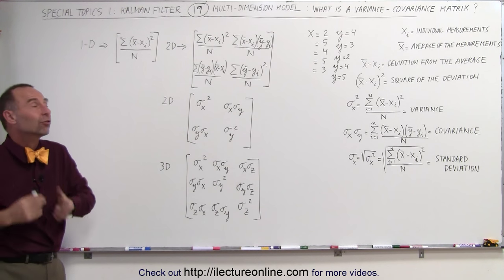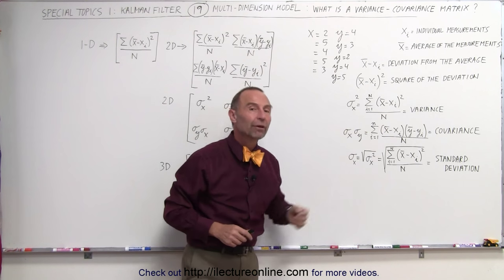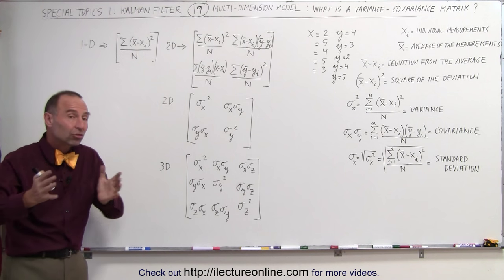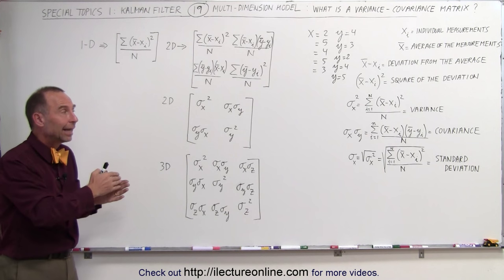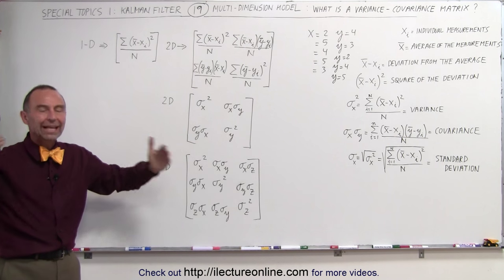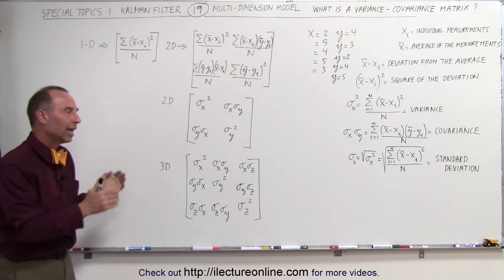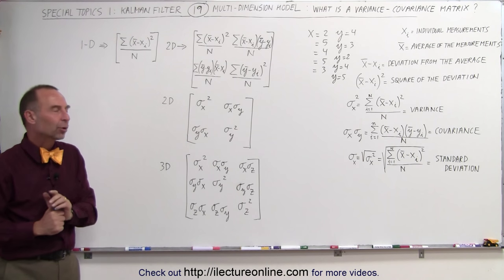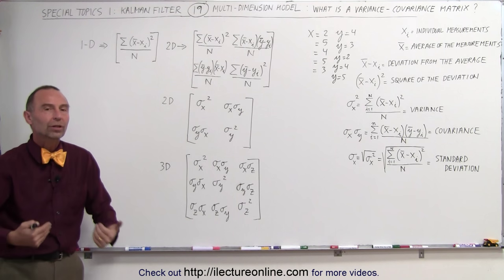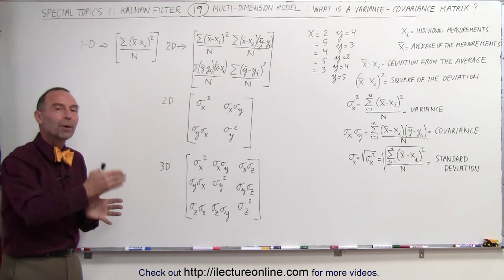Now that you know what a covariance matrix is, and the relationship between standard deviation, variance, and covariance, we can go ahead and start utilizing that. We'll do one more video explaining the relationship between covariance, variance, and standard deviation — including what that means for the Kalman gain — and then start utilizing that in some practical examples to see how we develop these matrices to come up with a Kalman gain.